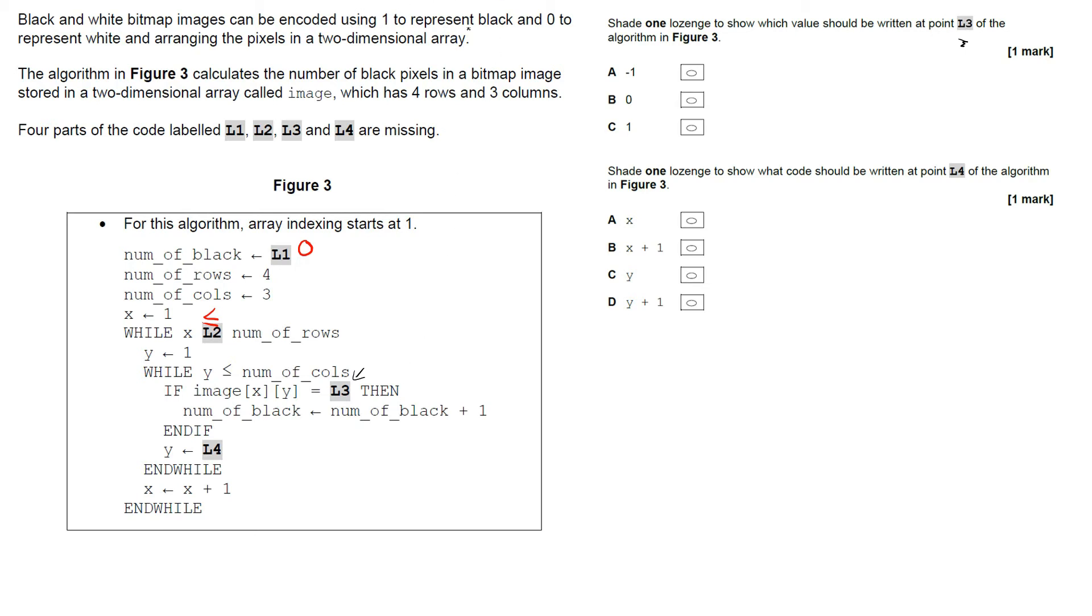So if we go up here, using 1 to represent black. So if the pixel is a 1, then increase the number of blacks by one. So if we go up to here, which one says one, and it's that one there.